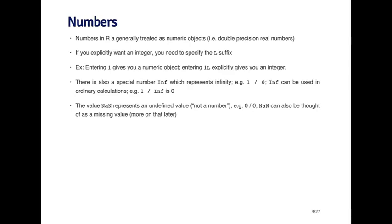There's another special value called NaN, and this represents an undefined value, so you can think of it as not a number. For example, if you take zero over zero, that's not a number, it's not defined. So you'll get a NaN back. NaN can also be thought of as a missing value, but we'll talk a little bit more about missing values a little bit later.